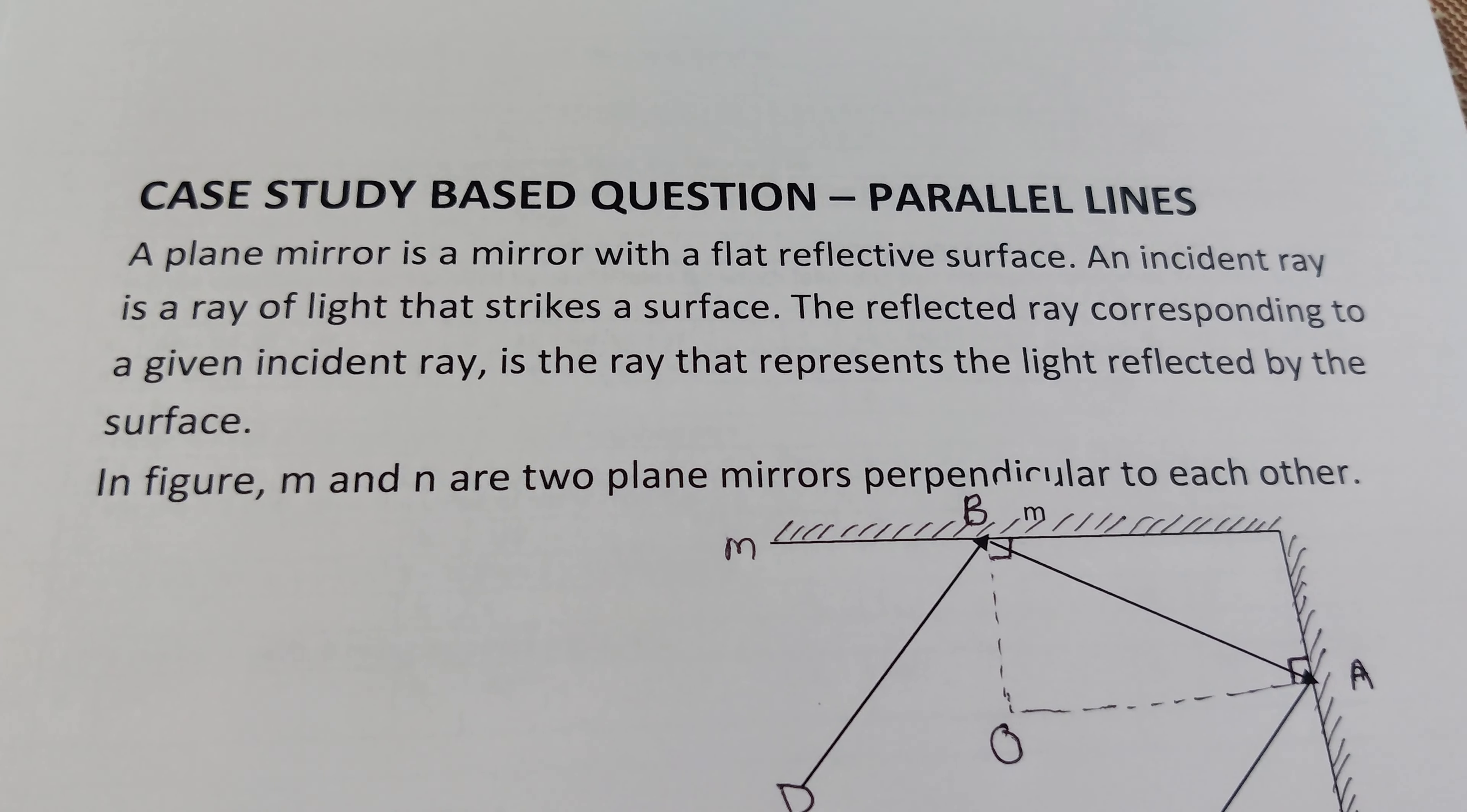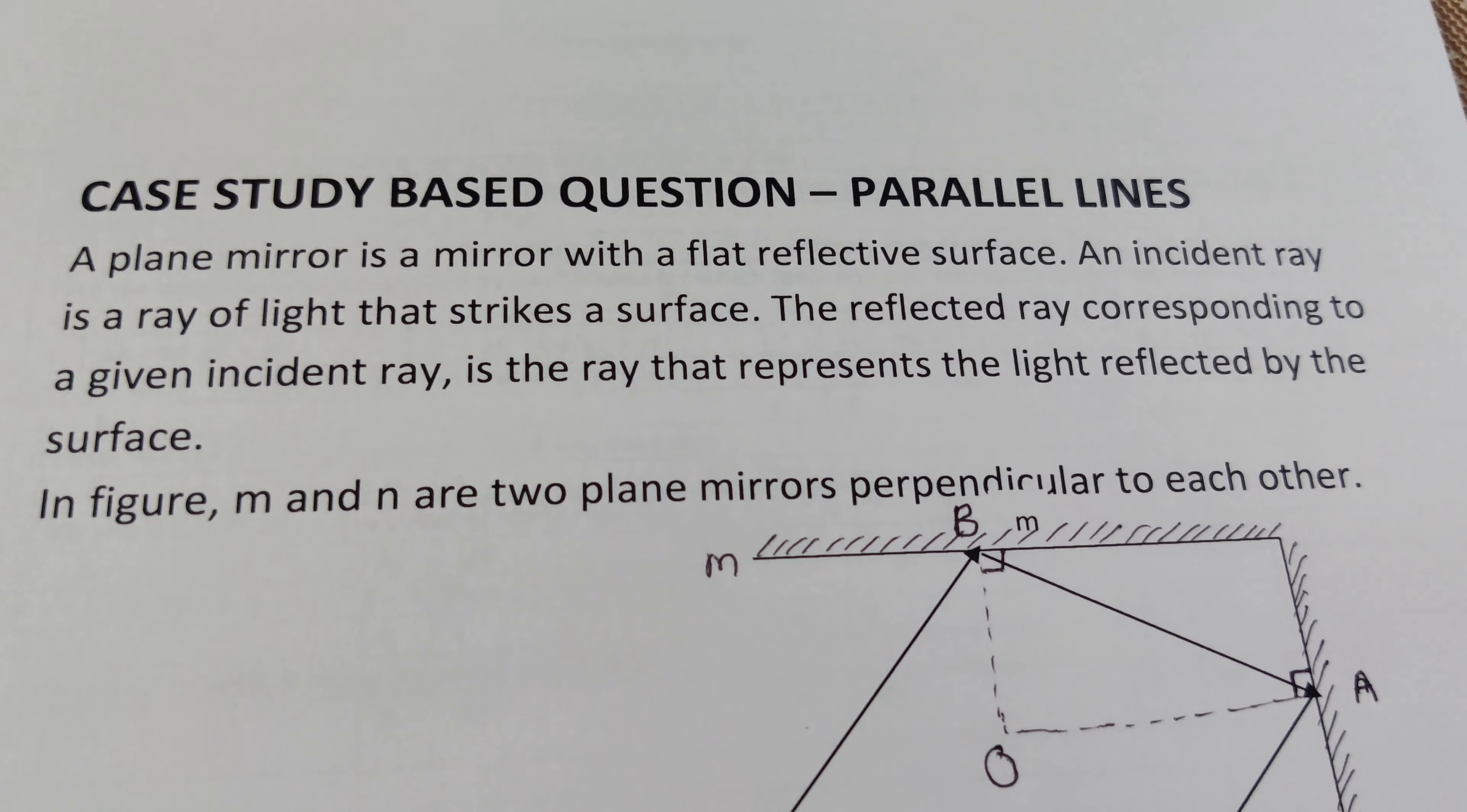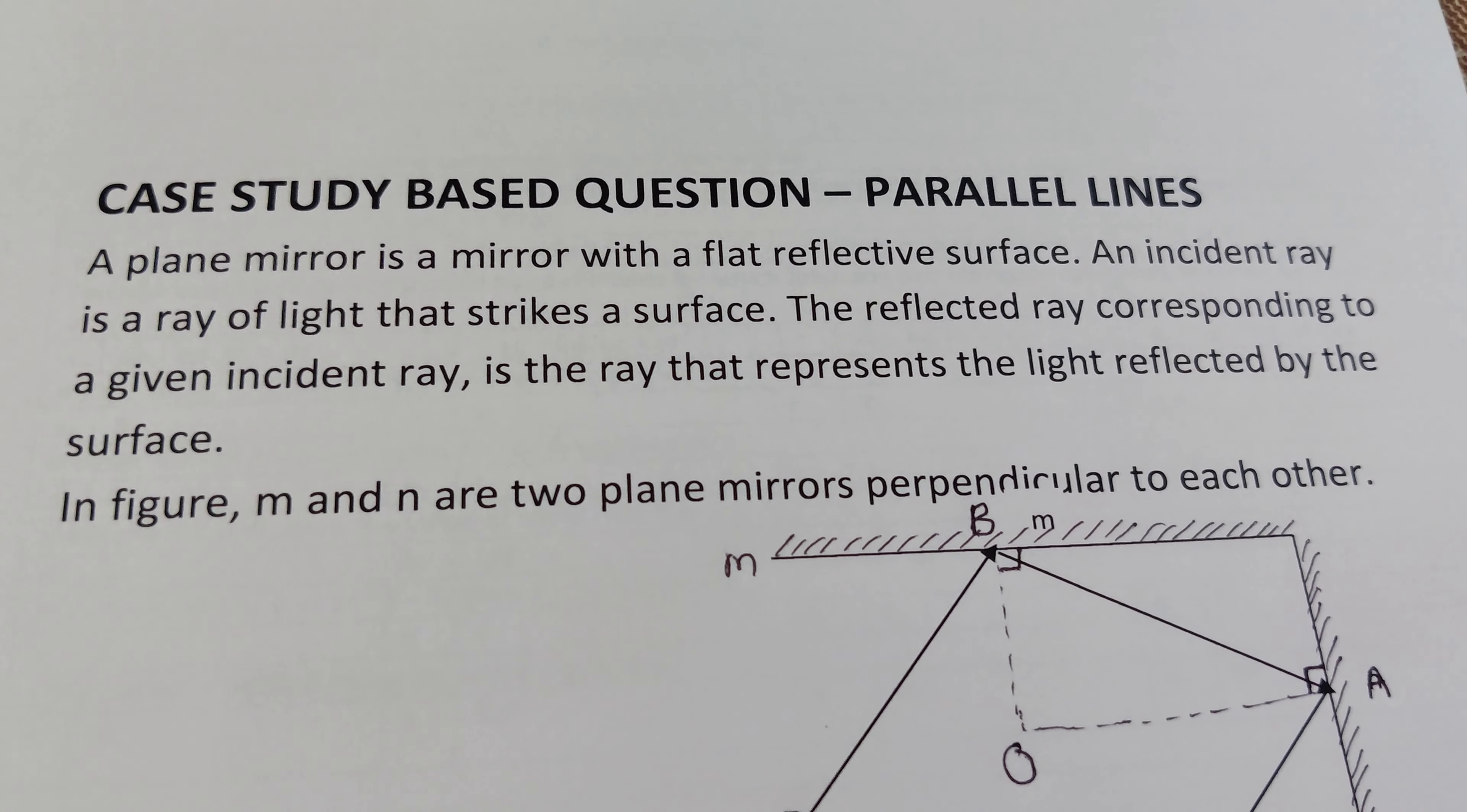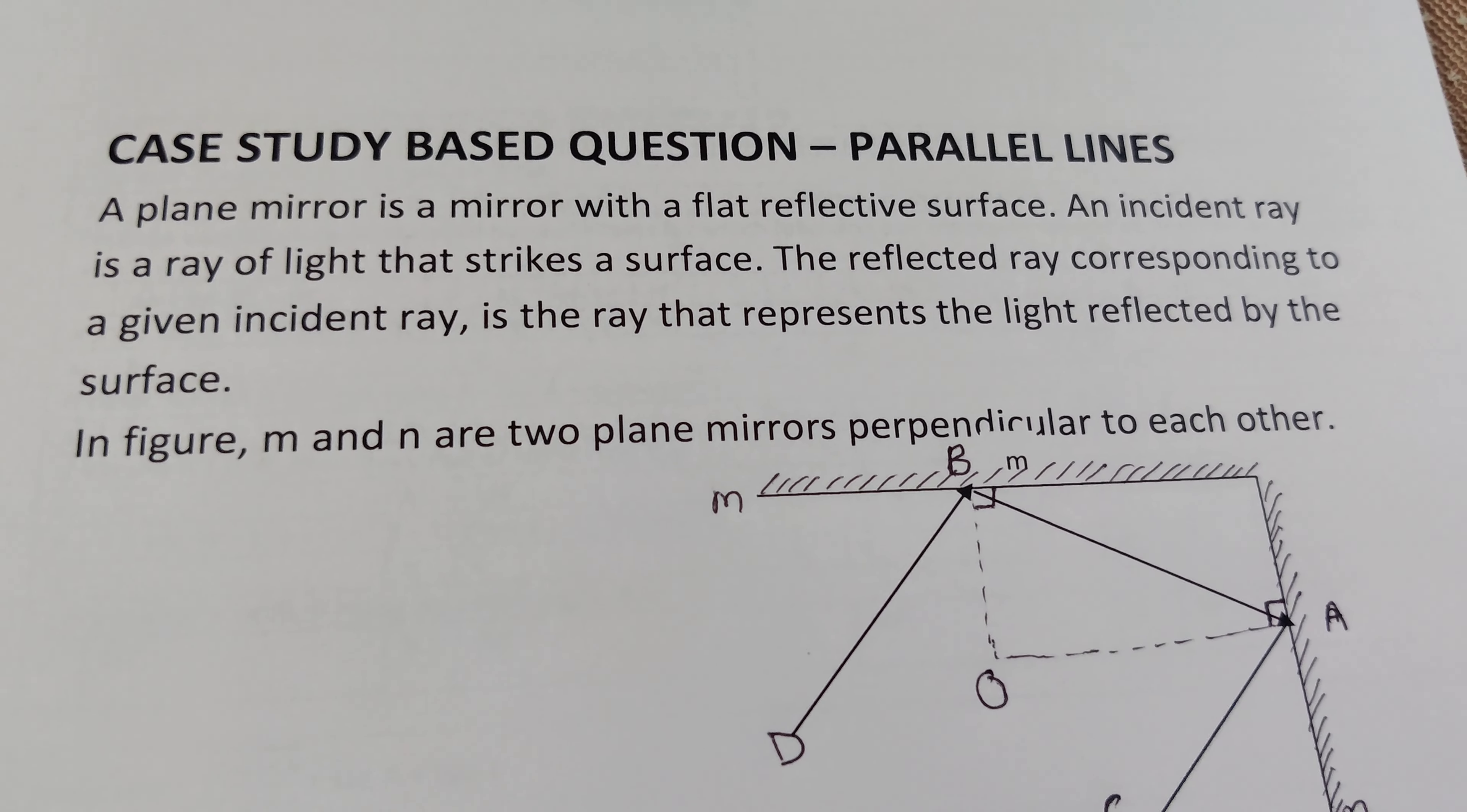A plane mirror is a mirror with a flat reflective surface. An incident ray is a ray of light that strikes a surface. The reflected ray corresponding to a given incident ray is the ray that represents the light reflected by the surface.